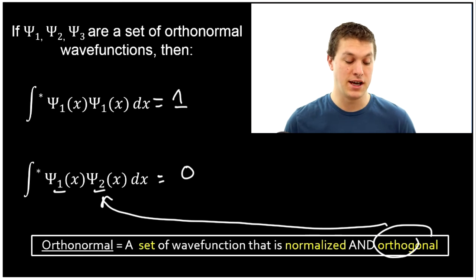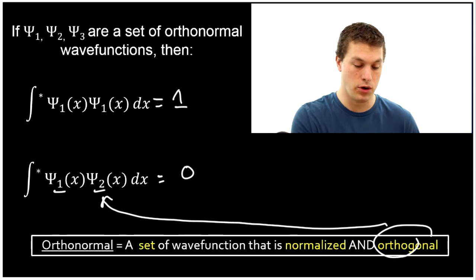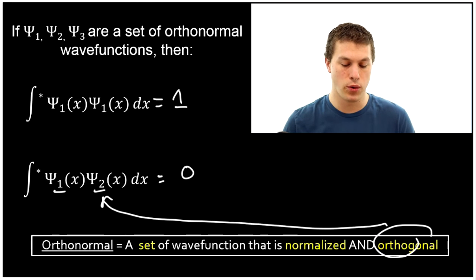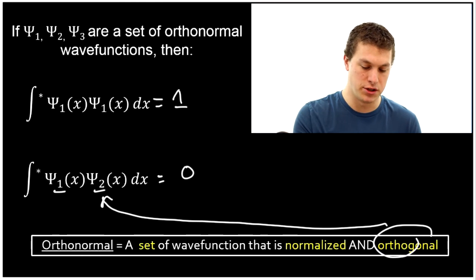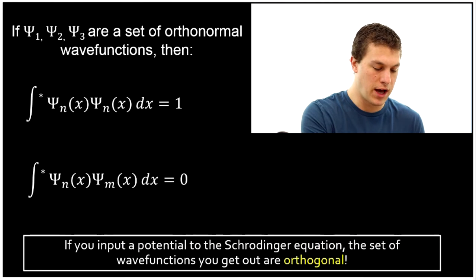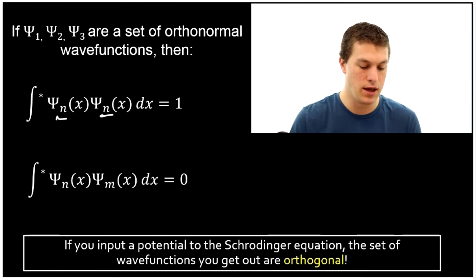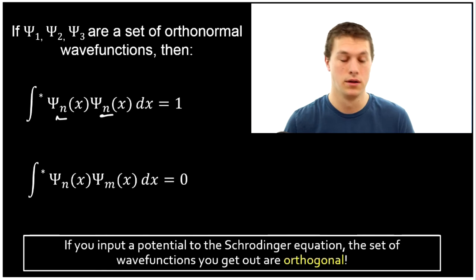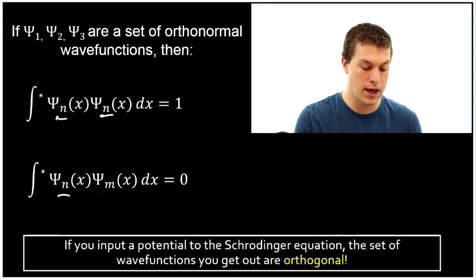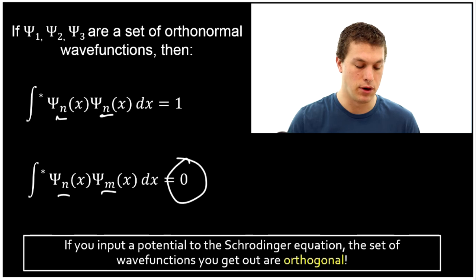If we multiply psi two by psi three, we'll also get zero. If we multiply psi one by psi three, we'll also get zero. So a way we can state this more generally: if we multiply psi n times psi n, we'll get out one. If we multiply psi n times psi m, where those aren't the same number, then we'll get out zero.